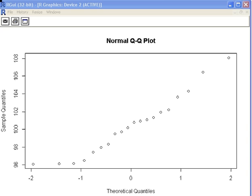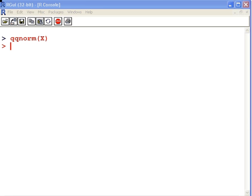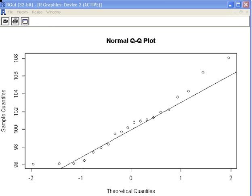Now I'm going to use the qqline function to superimpose a trend line on this graph. I do that as follows: qqline and X. Let's see what that looks like. There we have it there.